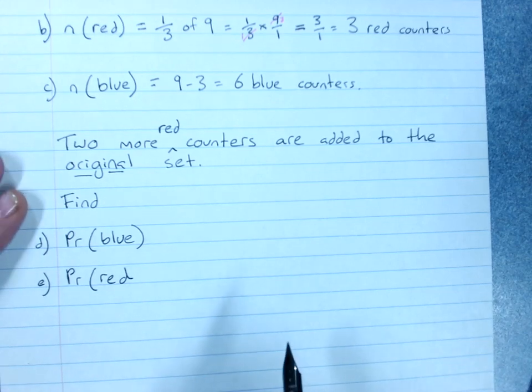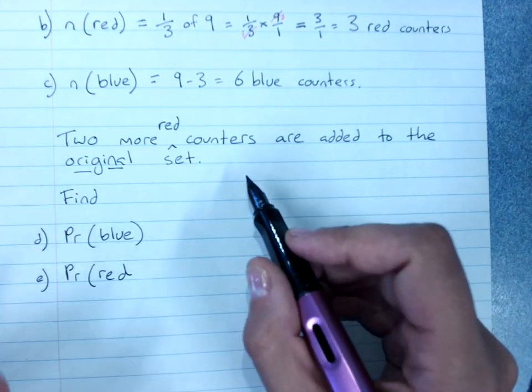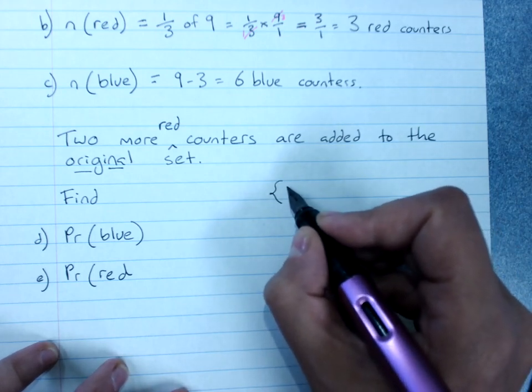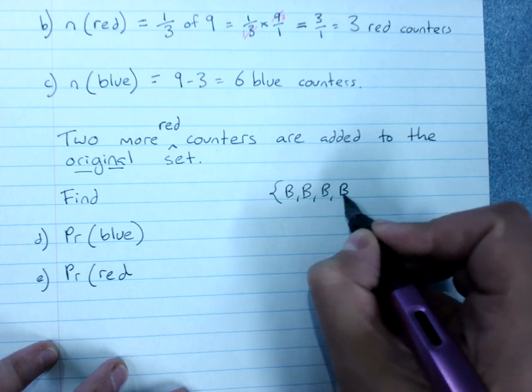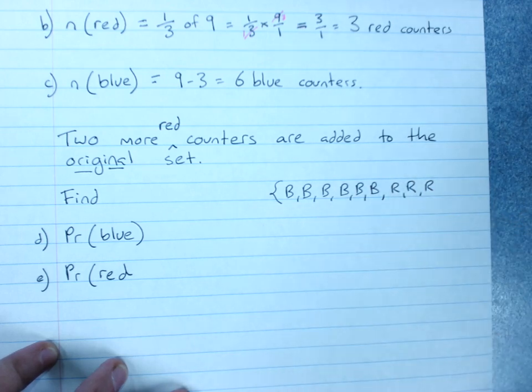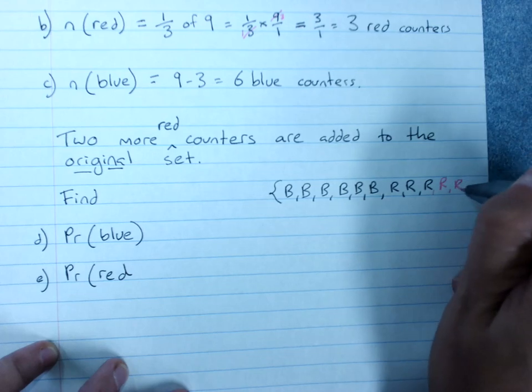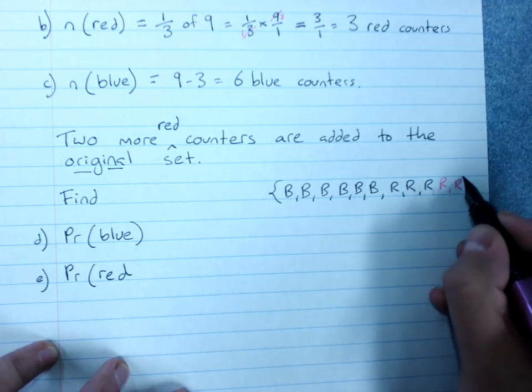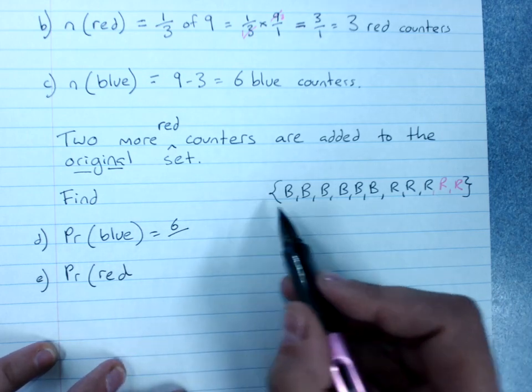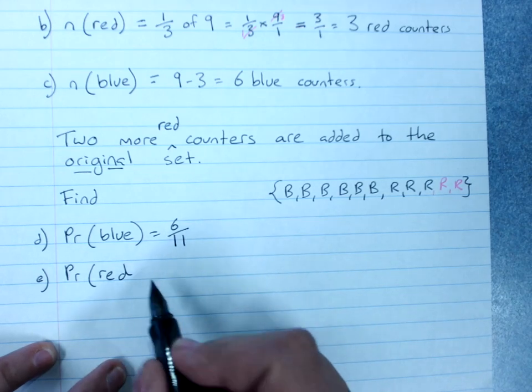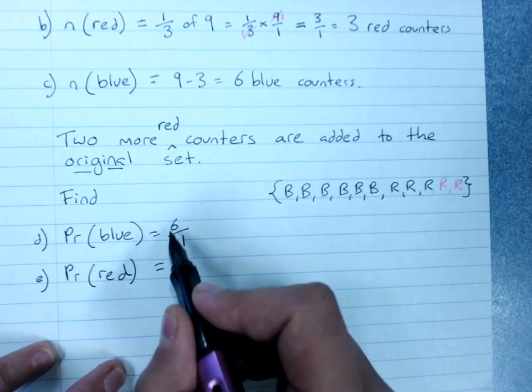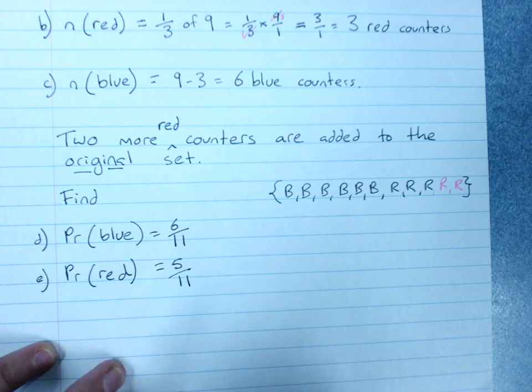2 more red counters are added to the original set. Now you might want to write down the sample space if you got confused, because we started with 6 blue and 3 red. And then I added 2 more reds to my original set. Now what's the probabilities? The probability of getting blue, there's still 6 blue counters, but now there's 2 extra counters. It's out of 11. And the probability of red, that's still the complementary events. So 6 out of 11 means I've got 5 out of 11 probability of red.